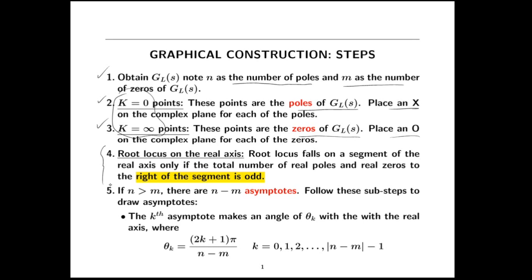Now we get to the first sketching rule. You can determine where the root locus is on the real axis just by counting up the poles and zeros that are on the real axis. What you do is divide the real axis up into pieces — I'll draw a little sketch here with a couple of poles and zeros. These are k equals 0 points and this is a k equals infinity point. We want to figure out where the root locus is on the real axis, so you break the real axis up into segments divided by these poles and zeros.